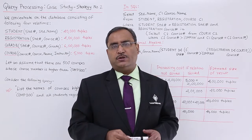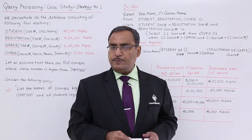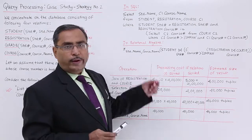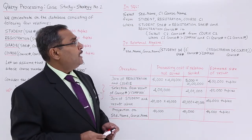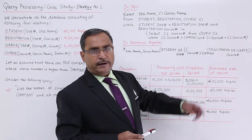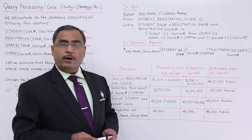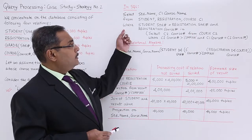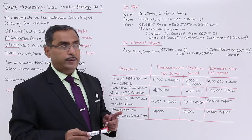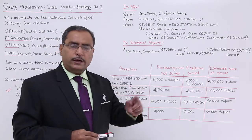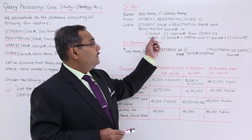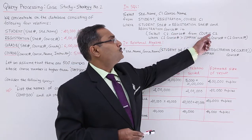In strategy number 2, we shall change our SQL query and the respective relational algebra expression will also change accordingly. The query selects student name and C1 dot course name, where C1 is the alias of the course. The FROM clause includes student, registration, and course C1, and we join student and registration on the student number attribute. Registration dot course number is also in the subquery selecting C2 dot course number from course C2.